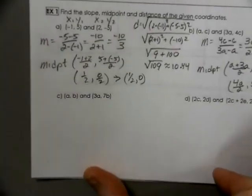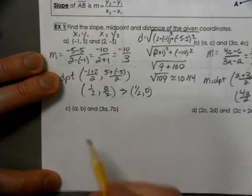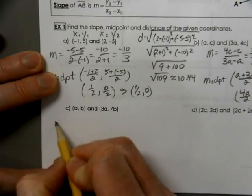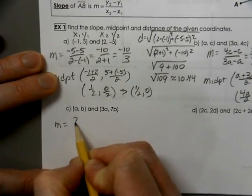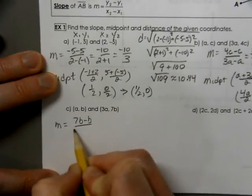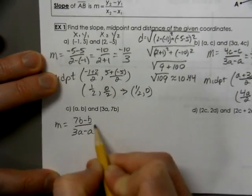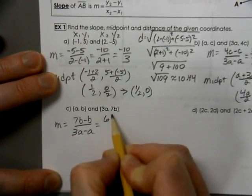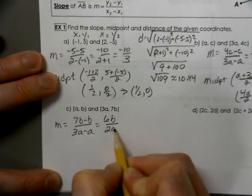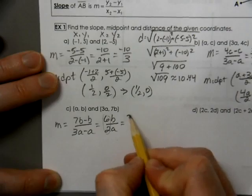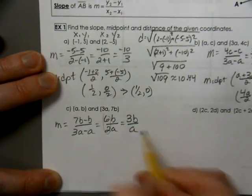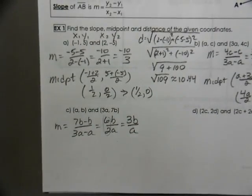Let's try that again. Down here with letter c. Our slope would be 7b minus b over 3a minus a. Leaves us with 6b over 2a. Now, that's reducible to become 3b over a. 2 goes into 6 three times.